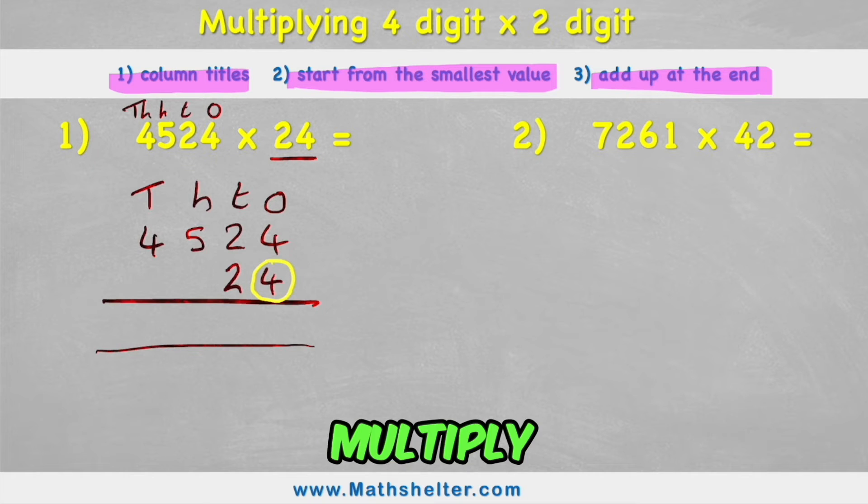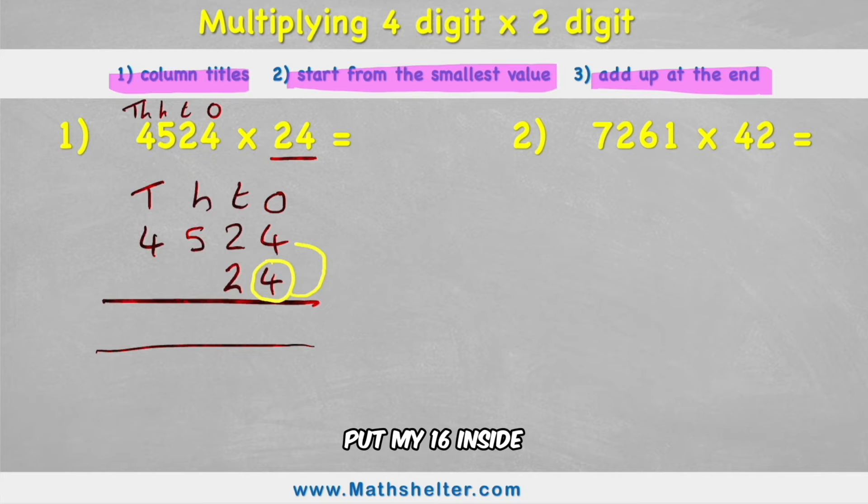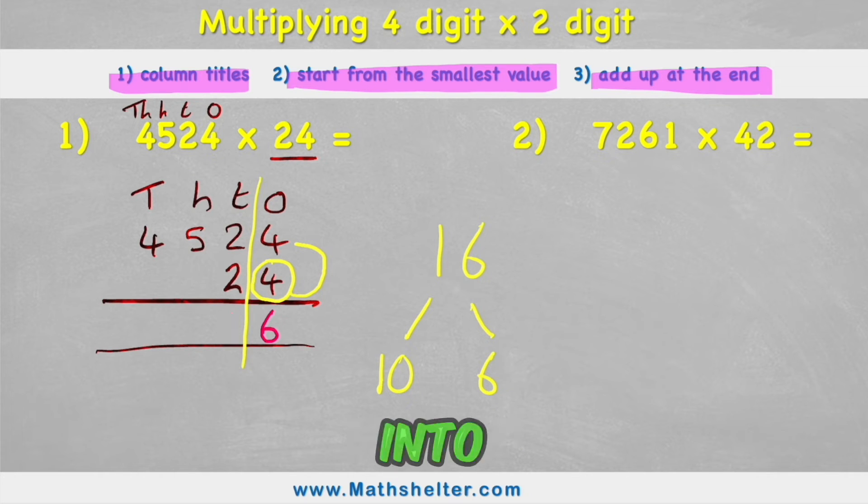And then I'm going to simply multiply it by the smallest value of the number on top, which is four. And four times four is 16. Now if I tried to put my 16 inside this column just like this, it would mean that I've got a two digit number in the ones column. So I can't do that. So I have to look at my 16 and understand that it's made up of a 10 and a 6. So the 6 will sit in the ones column, but the 10 will go into the tens column. But because I've not worked out the tens yet, I'm not going to put it into the answer column. I'm going to put it just here on the line waiting.